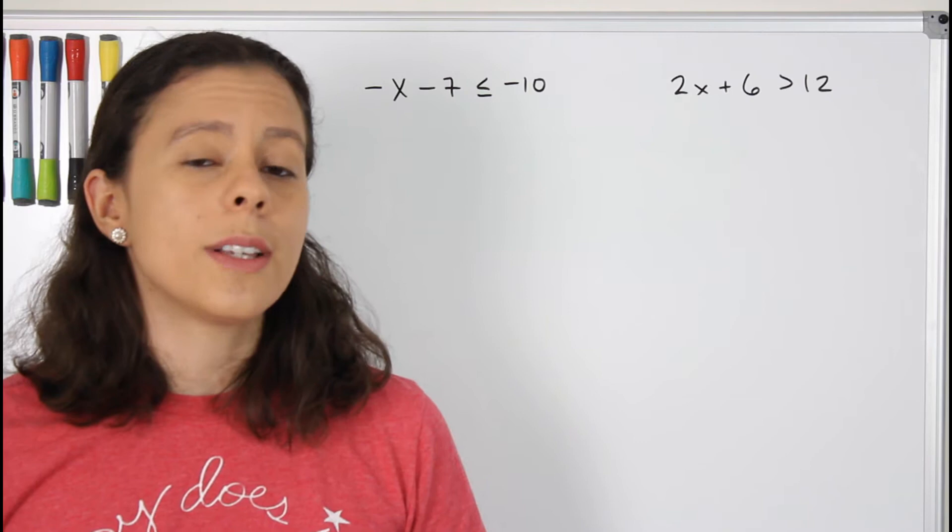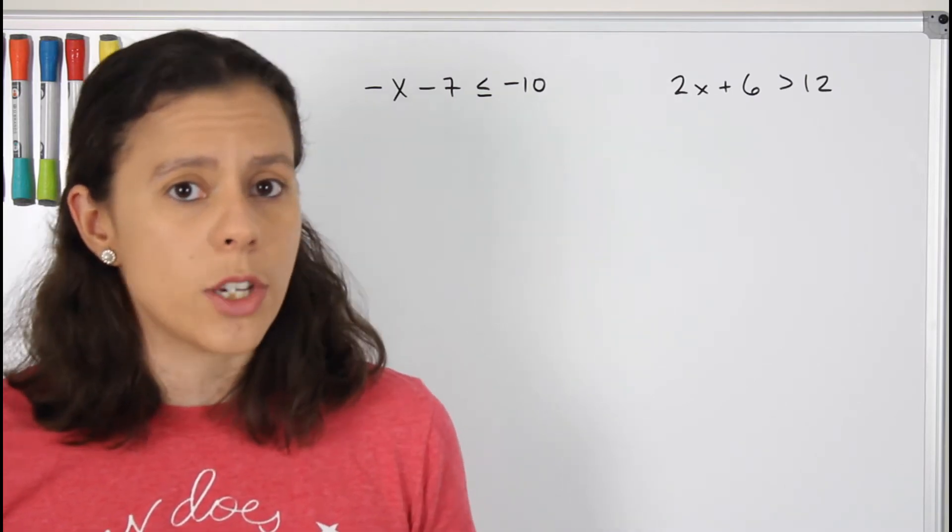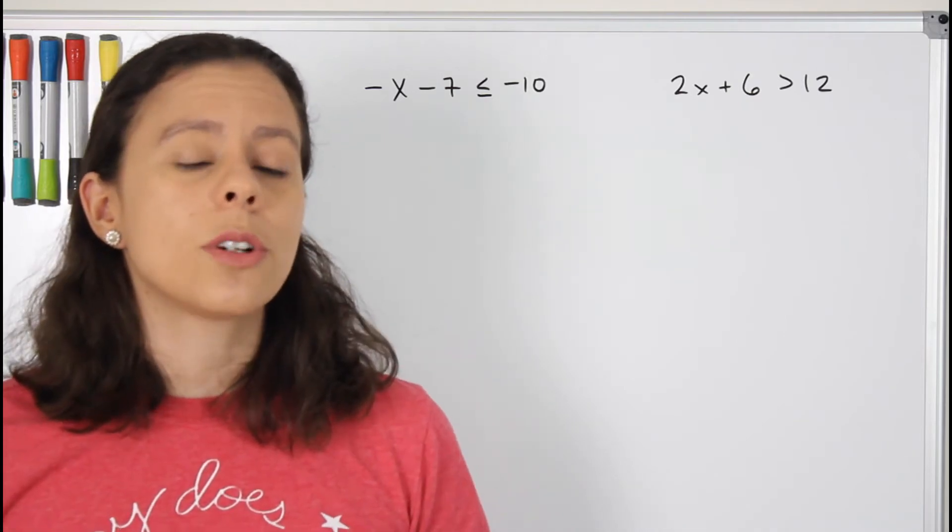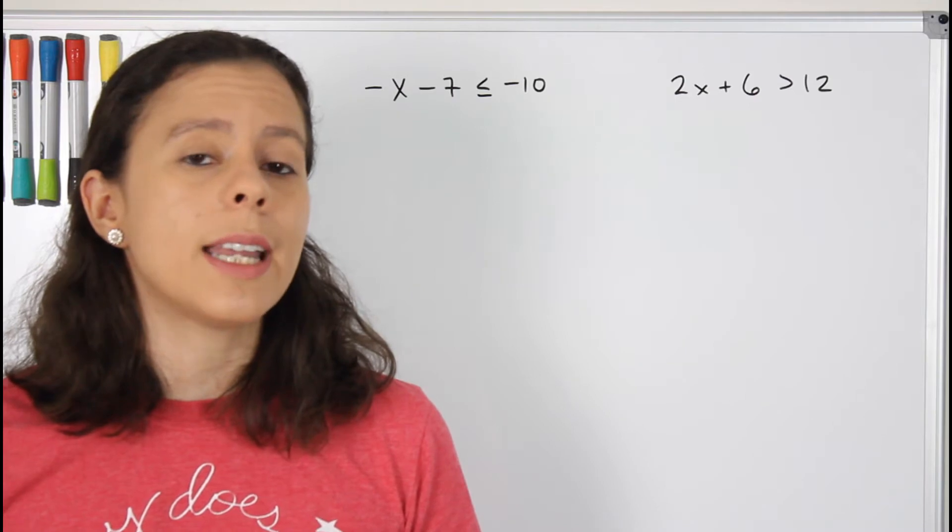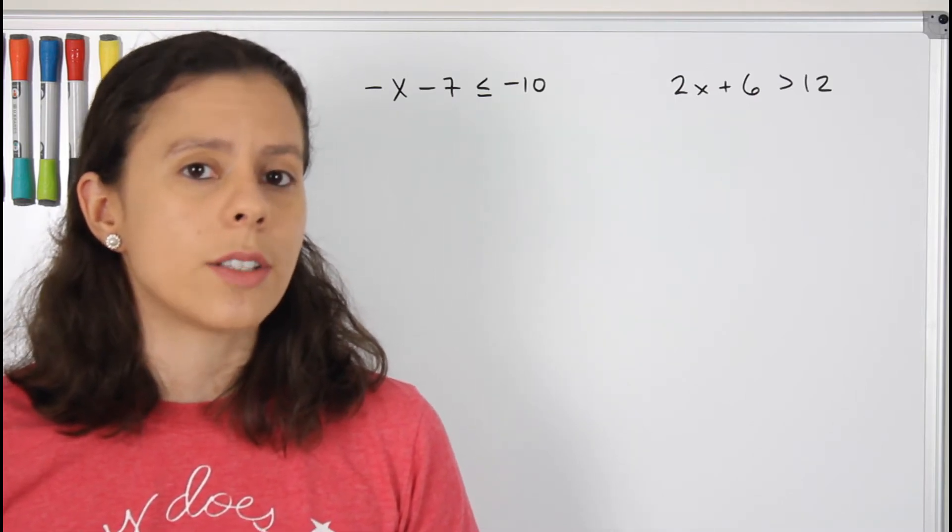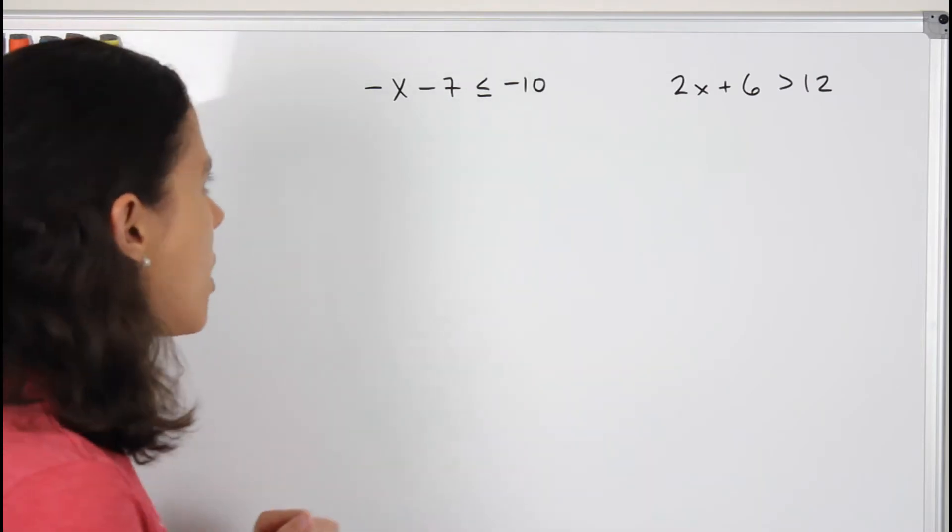So the first thing I want you to know is that you're going to be solving an inequality the exact same way you would be solving an equation. All right, so all the steps are the same except that you're going to be flipping the inequality symbol when you're multiplying or dividing by a negative number on both sides of the equation. And to illustrate that, I'm just going to do two super quick exercises. Let's go.